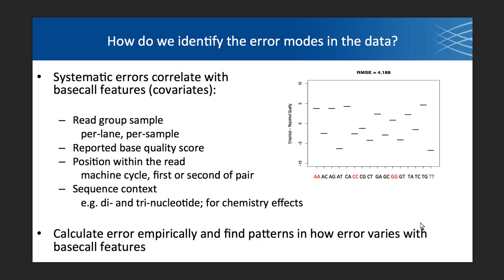We identify the error modes in the data using base call features, or what we call covariates. The default settings for BQSR look at four covariates. First is the read group sample — we analyze per lane per sample data, and you'll need at least 100 million bases for BQSR to be effective at this level. Next, we use the reported base quality score that the sequencer emits. Third, we use the position within the read — machine cycle, first or second of pair. And finally, we use sequencing context — dinucleotide and trinucleotide sequencing context for chemistry effects.